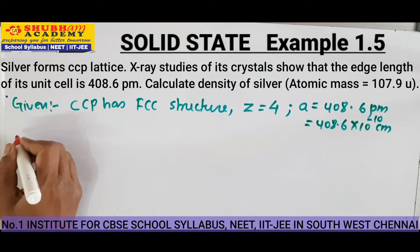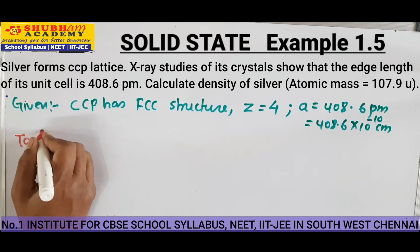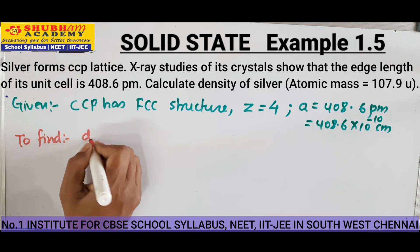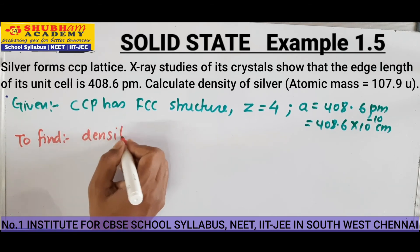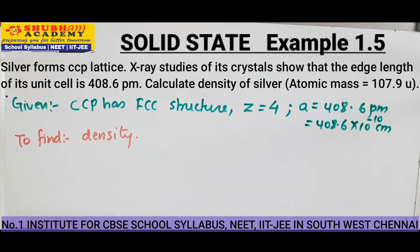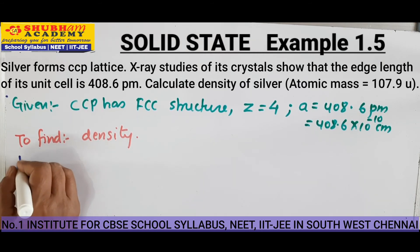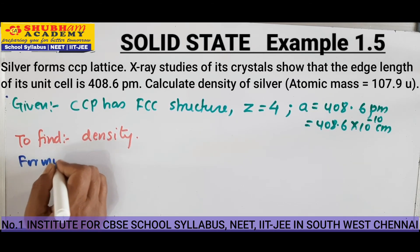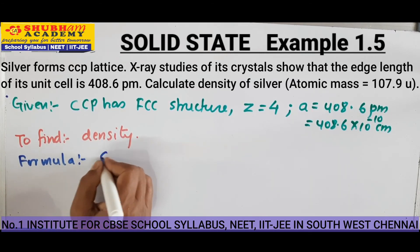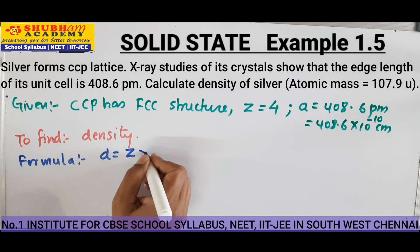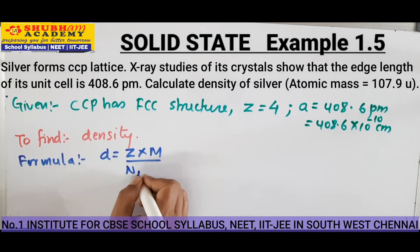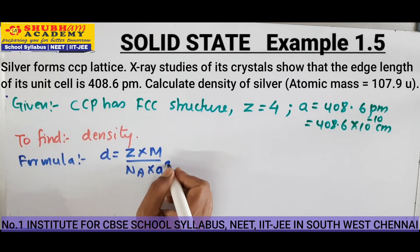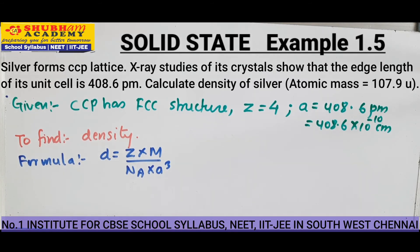We need to find density. The formula is: D equals Z into M divided by N_A into A cube. Now we will substitute the values.